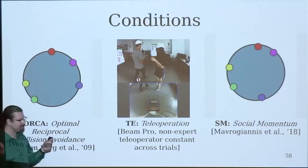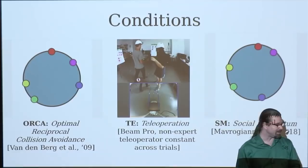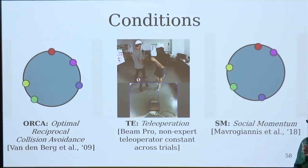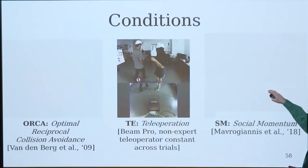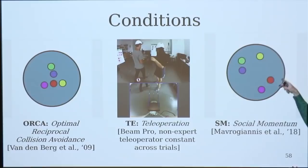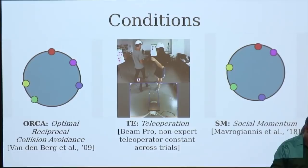The second one is our tele-operation. So, we had a human tele-operator running the beam, just trying to smoothly navigate from one station to the next. And then on the right is our social momentum framework. And I'll play this one again just so you can see it. You get much more of an orbiting kind of behavior as you'd expect for the sort of natural dynamics of the system.